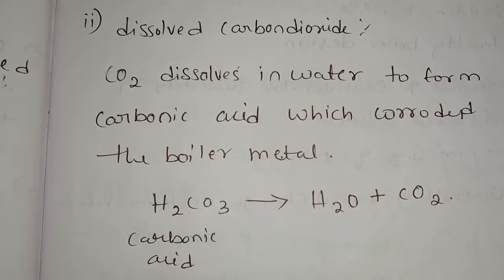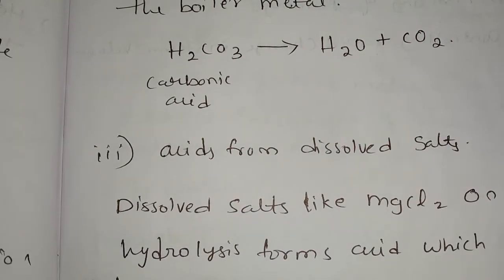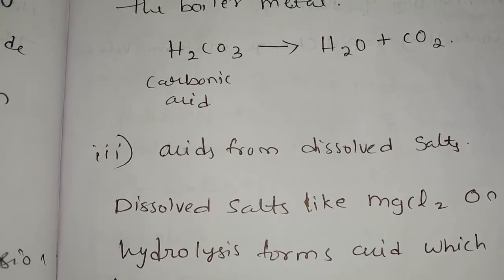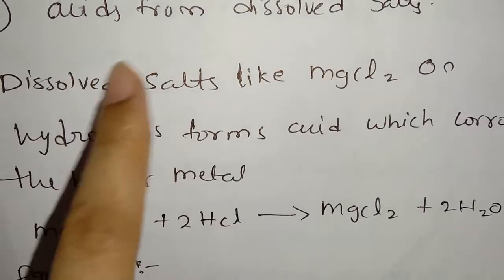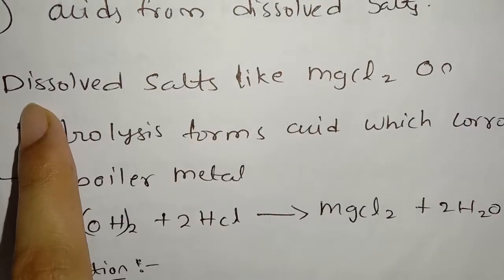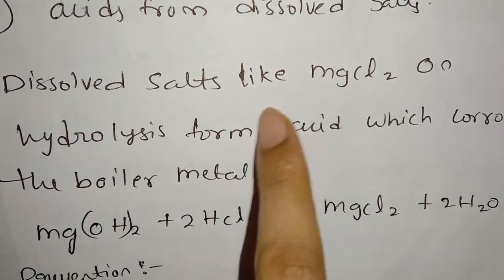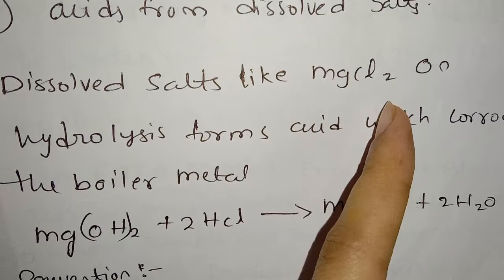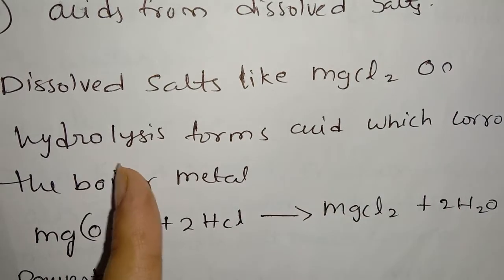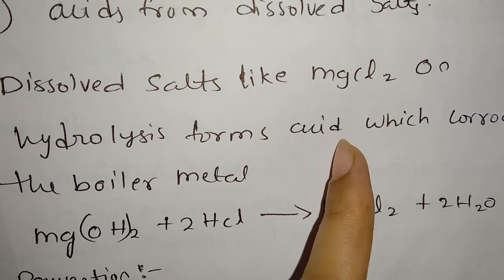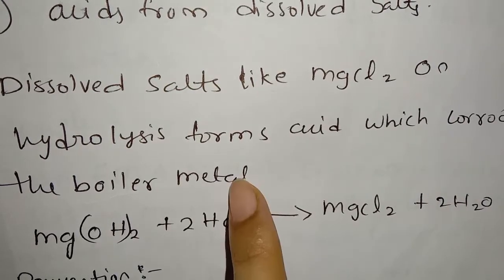Next is acids from dissolved salts. Dissolved salts like MgCl₂ — magnesium chloride — on hydrolysis form acids which corrode the boiler metal.